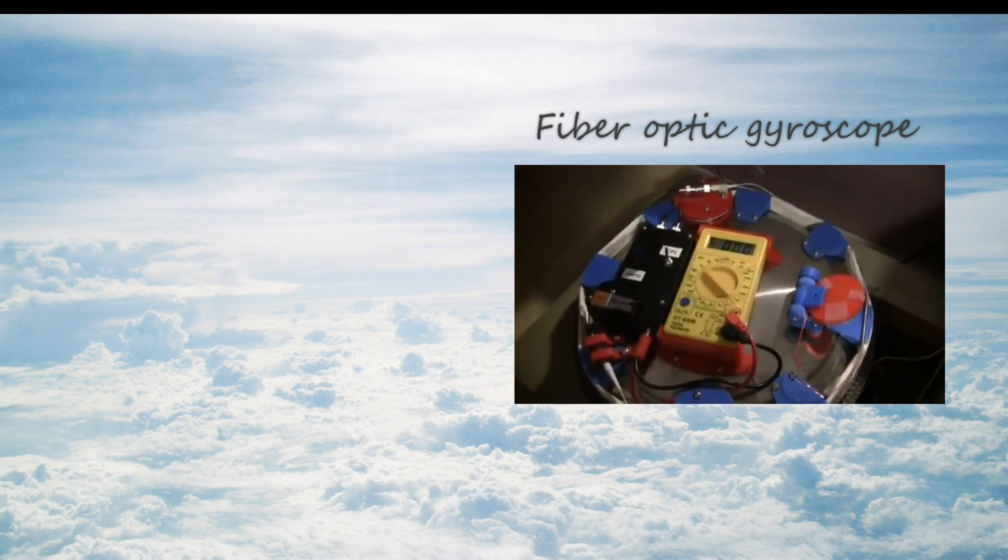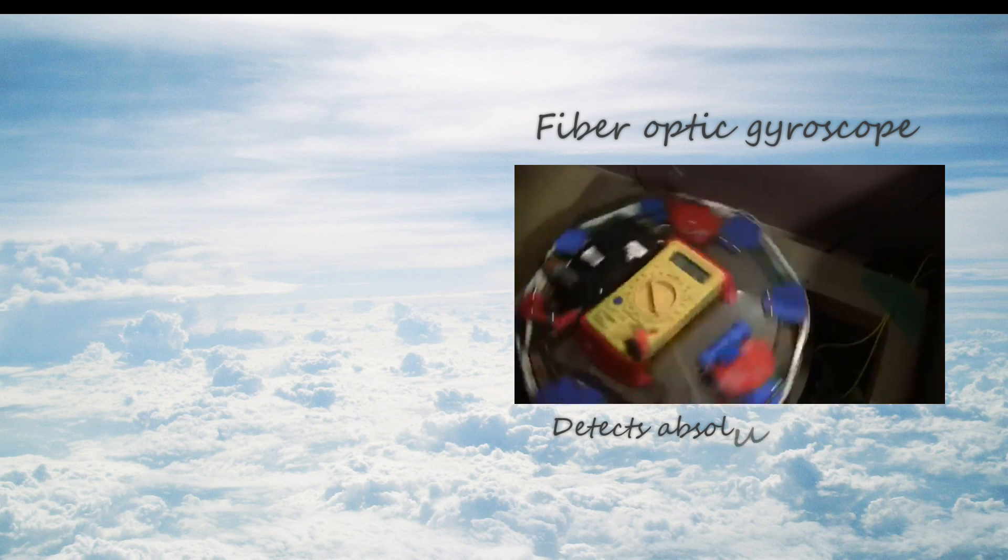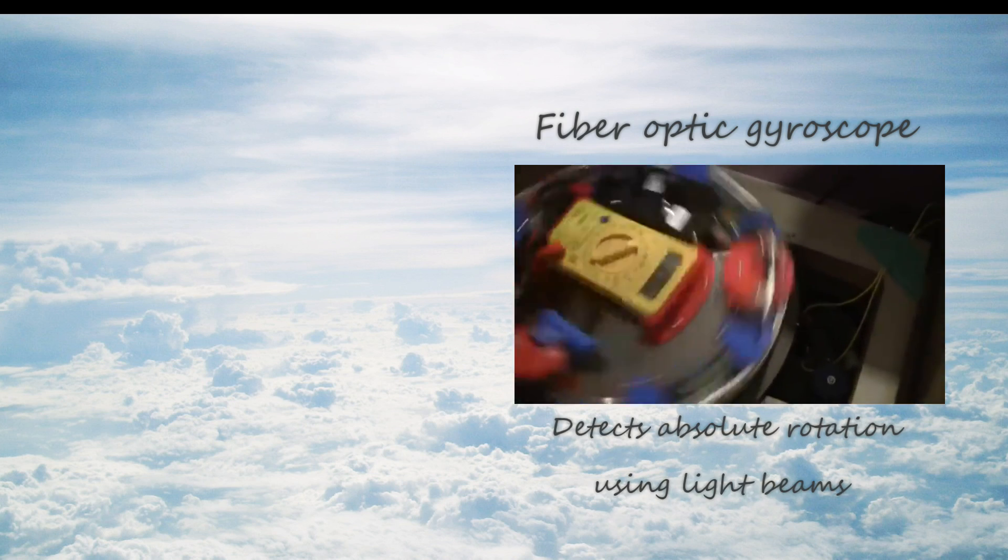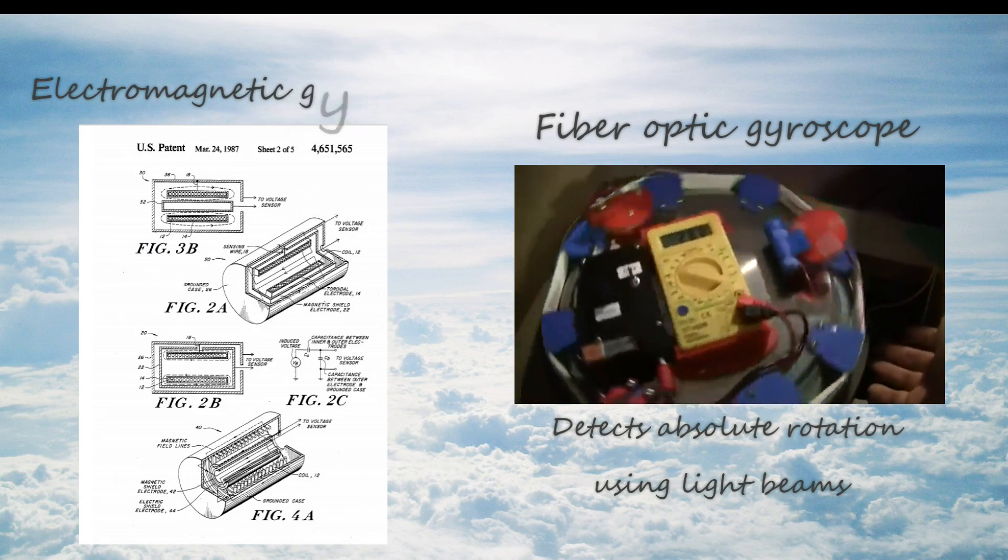This is because the Kennard device resembles in principle the fiber optic gyroscope. Whereas the fiber optic gyroscope detects absolute rotation by measuring differences in the arrival time of counterpropagating beams of light, the Keene version detects absolute rotation electromagnetically.